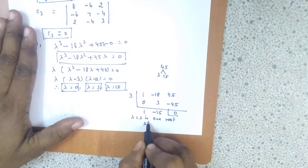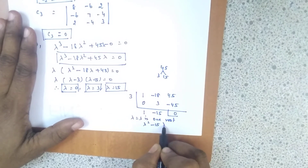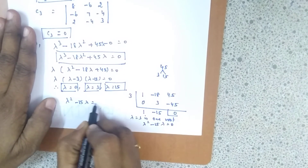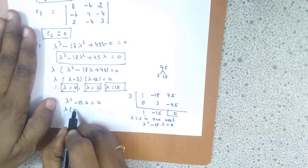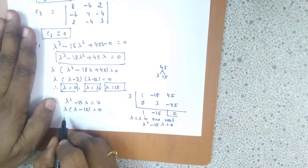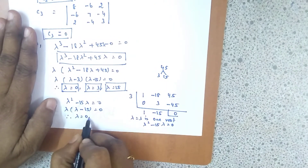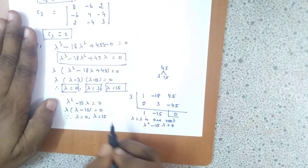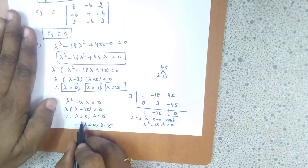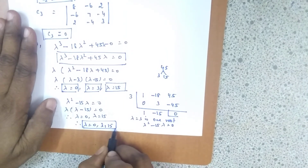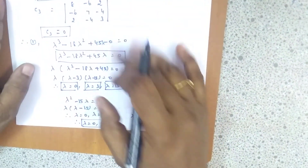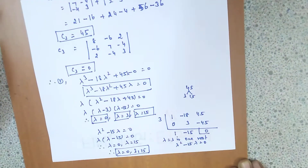The remaining polynomial after synthetic division is λ² - 15λ = 0. Taking λ outside: λ(λ - 15) = 0, giving λ = 0 and λ = 15. So by synthetic division also the roots are λ = 0, 3, and 15 — the same answer as before.